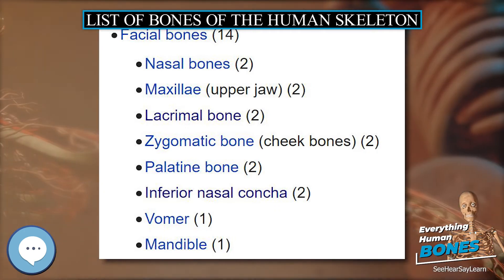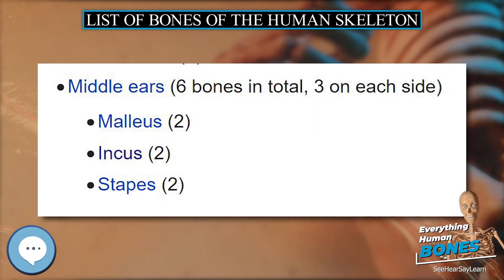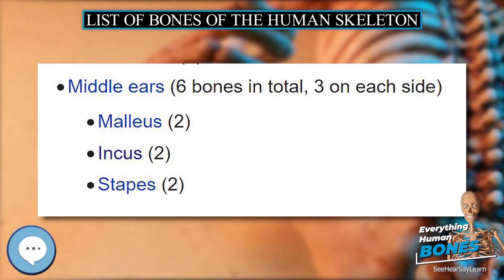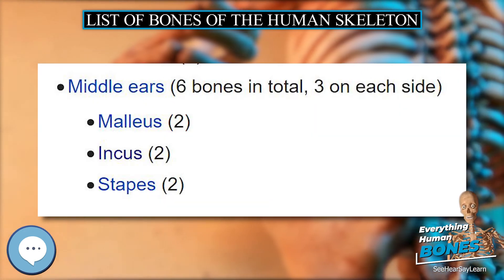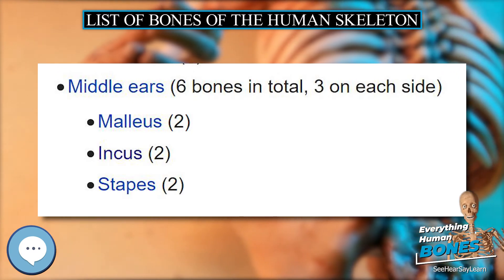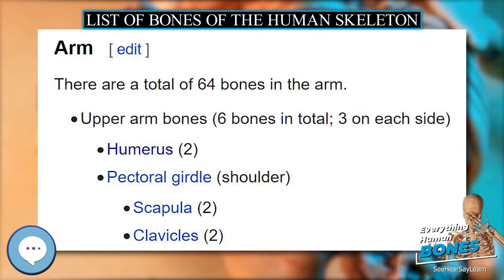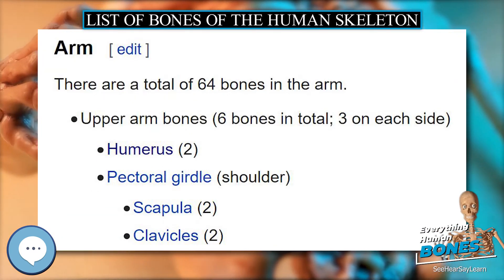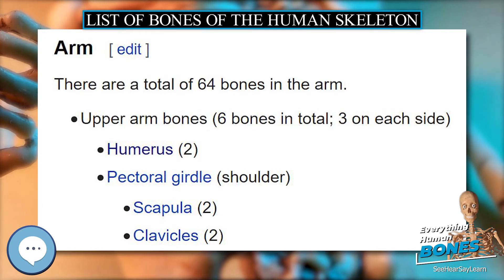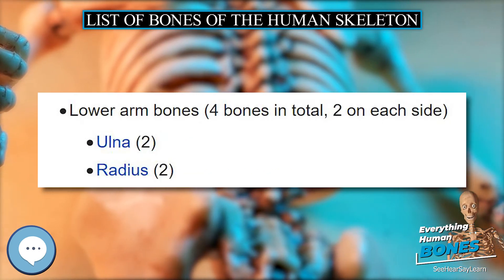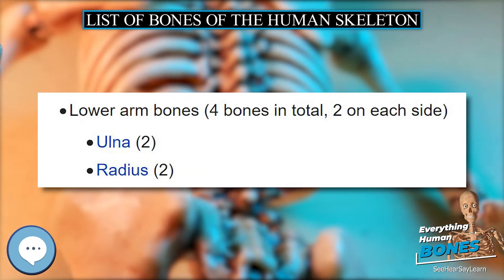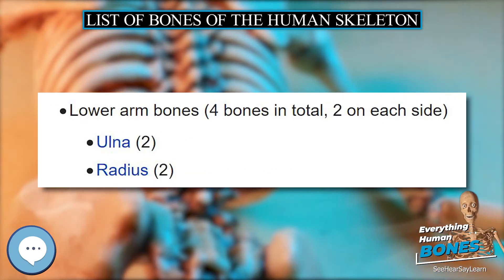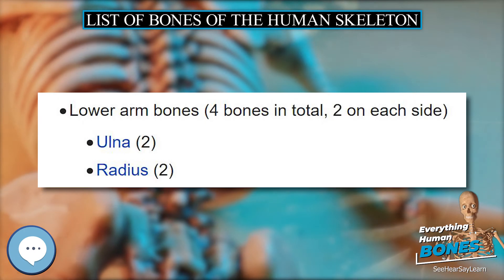Bones. The axial skeleton, comprising the spine, chest and head, contains 80 bones. The appendicular skeleton, comprising the arms and legs, including the shoulder and pelvic girdles, contains 126 bones, bringing the total for the entire skeleton to 206 bones.